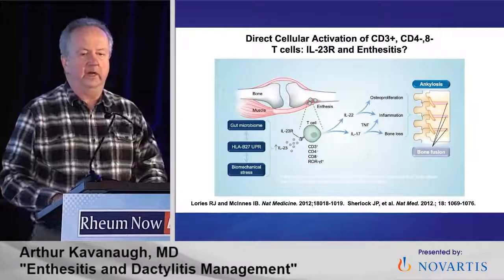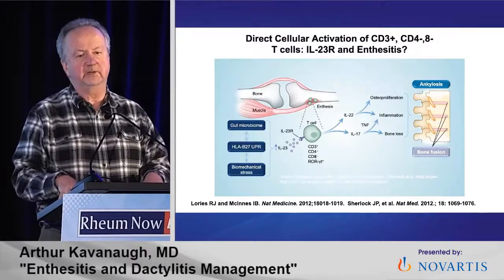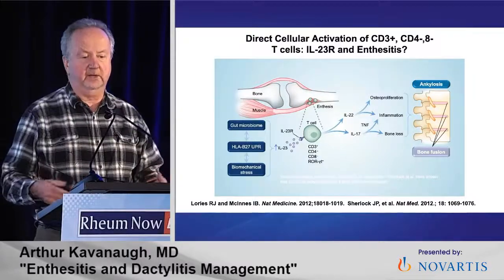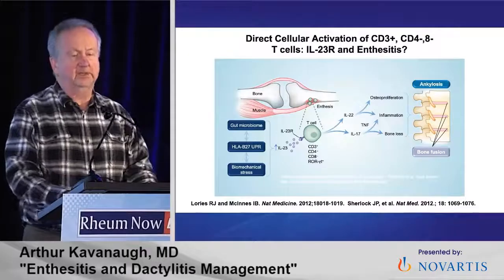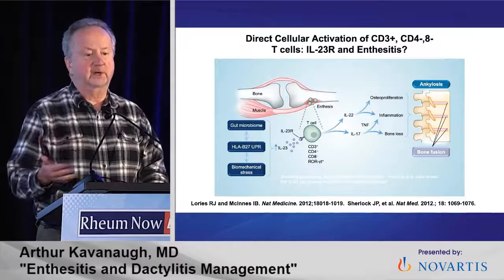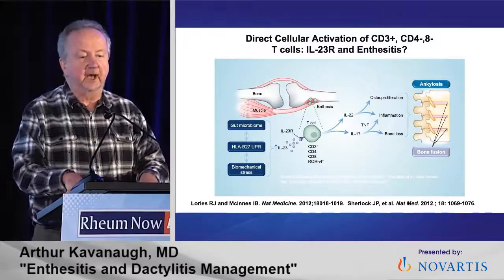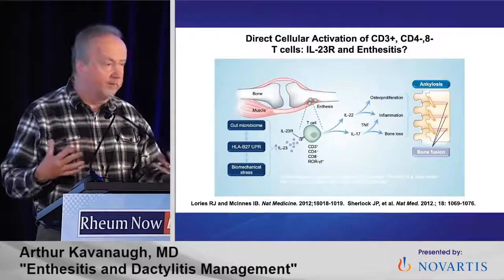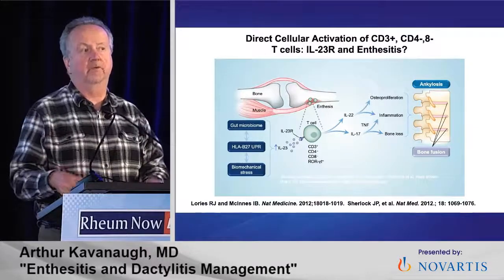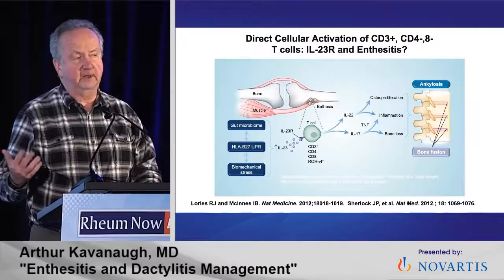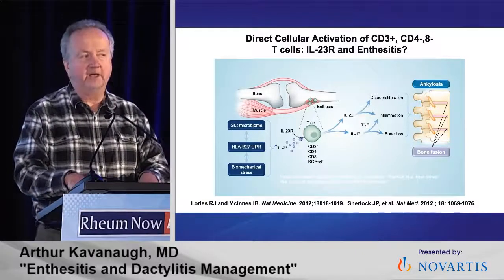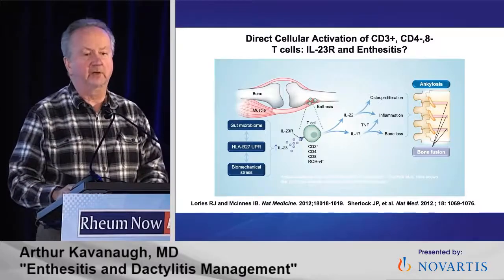What brought enthesial disease into its own was the idea that maybe something different was going on with enthesial disease compared to skin disease or peripheral arthritis. This was the elegant work of Rick Lories and Iain McInnes, looking at the potential role of IL-23. IL-23 receptor-expressing T cells present in the entheses respond to IL-23, which is elaborated presumably as part of the gut-joint axis. That leads to elaboration of IL-22, which gives osteoblastic changes and overgrowth, and also IL-17, which synergizing with TNF gives us some of the damage.